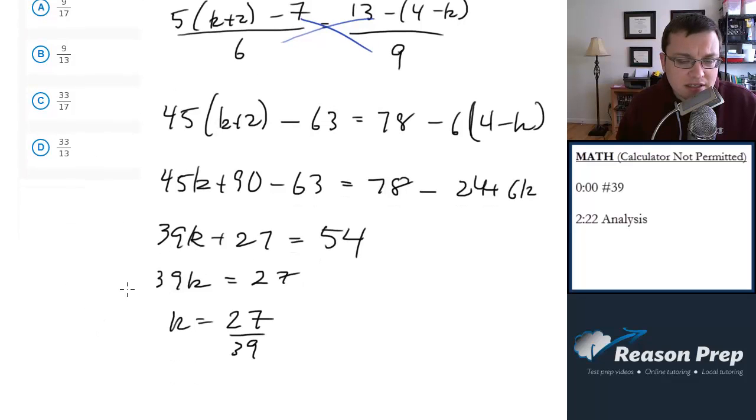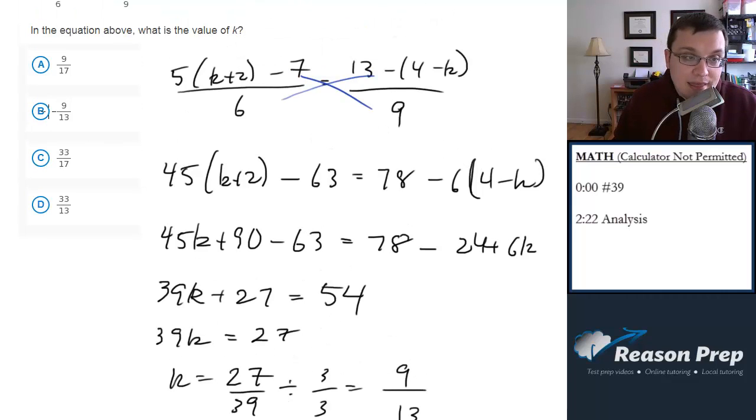It doesn't match any of these. Let's see if we can take out a common factor here. Let's divide by 3 over 3, right? Each of these have a 3 in common. So we'll cancel out a 3. We get 9 over 13. And that is choice B. And that's the answer.